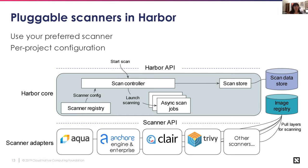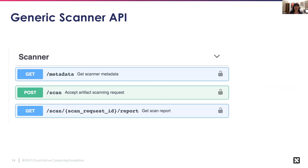The generic scanner API is very simple — an asynchronous API where we can request metadata from a scanner, allowing Harbor to find out what capabilities the scanner has. You make a POST scan request specifying which artifact or container image to start scanning, then use a GET request to retrieve the report from the scanner adapter. The scanner adapter makes either API calls or executable calls depending on the particular scanner to execute the scan and return results to Harbor in the standardized format.